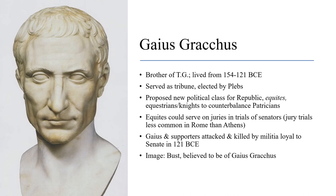Gaius proposed a new political class for the Republic: the equites, also known as equestrians or knights. Traditionally the equites were cavalry — they had horses and were generally wealthier people living in rural areas on the Italian peninsula outside of Rome. Gaius's idea was to have the equites become a new political class that would balance the power of the Senate. The equites would serve on trials of senators, overseeing cases of fraud and other crimes.